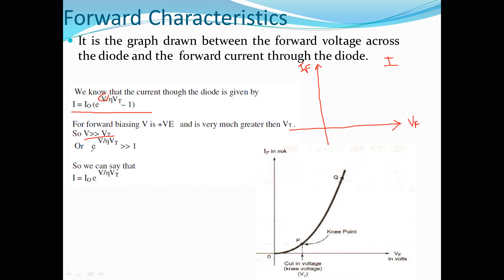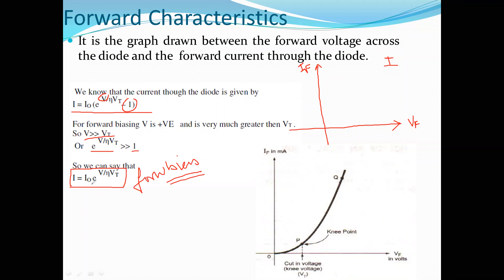So what will happen? This exponential factor will be much greater than 1, and we can ignore the 1 from the diode equation. This gives us the representation for the forward bias condition. We can prove that the current is exponentially related to the applied voltage in forward bias.